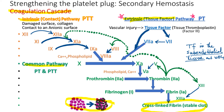For example, disorders involving the extrinsic pathway can be detected by measuring PT (prothrombin time), and those involving the intrinsic pathway with PTT (partial thromboplastin time). When both PT and PTT are abnormally prolonged, a disorder involving the common pathway is suspected. Let's discuss the extrinsic pathway first.